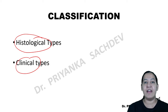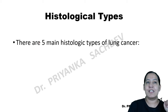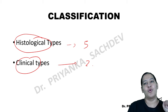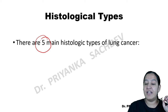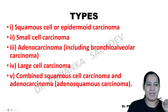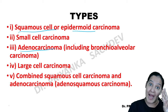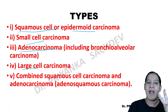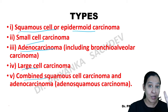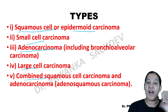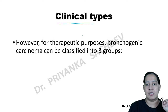Histologically we divide lung cancers into five types, and clinically we divide them into two types. The five histological types are: number one, squamous cell carcinoma (also known as epidermoid carcinoma); number two, adenocarcinoma; number three, small cell carcinoma; number four, large cell carcinoma; and number five, combined squamous and adeno (adenosquamous carcinoma).